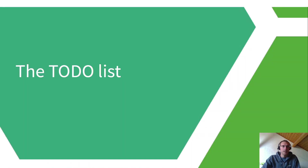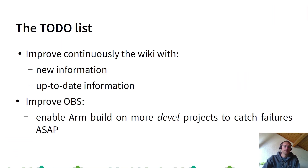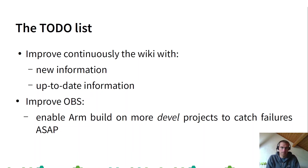Finally, we have the to-do list. We need to continuously improve the wiki with new and up-to-date information. The pages which are most up to date are those for the Raspberry Pi 2, 3, and 4.